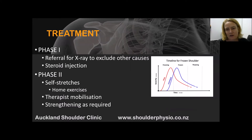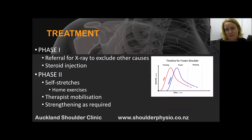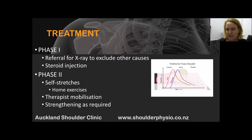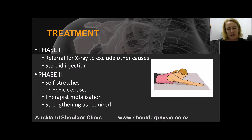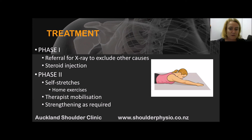With regards to treatment, there is overwhelming evidence that in the early stages, having an intra-articular steroid injection into the shoulder will help with that vascular proliferation. You also need an x-ray to exclude any other cause of a stiff shoulder, such as osteoarthritis or other bony diseases. In the second phase, there is evidence that doing self-stretches and exercises will help your frozen shoulder. There is also evidence that having a therapist mobilize your shoulder with passive stretches will help. If your shoulder has been immobilized for a long period, strengthening may also be required.